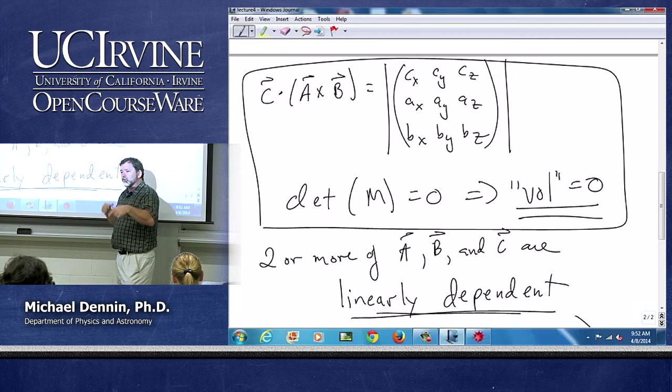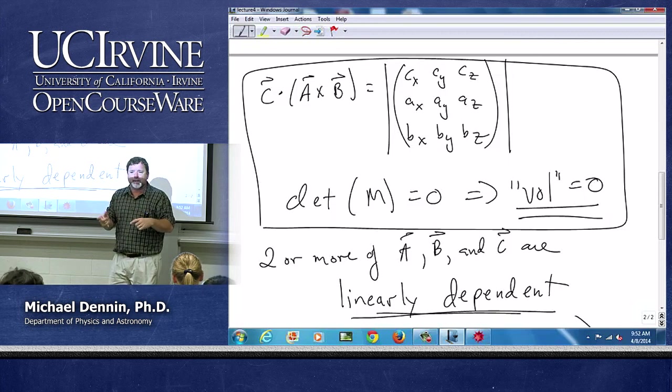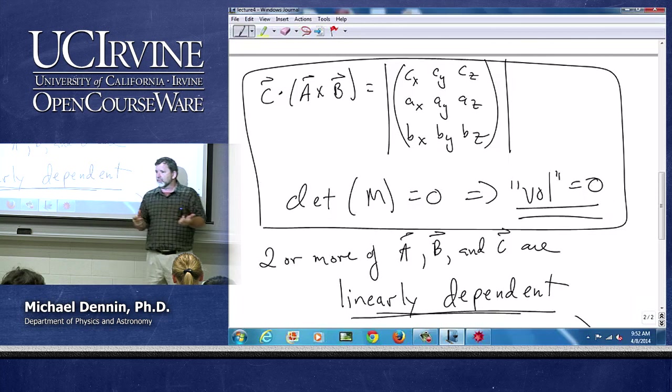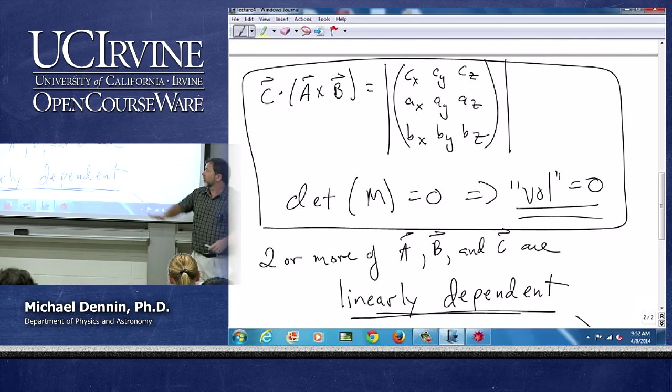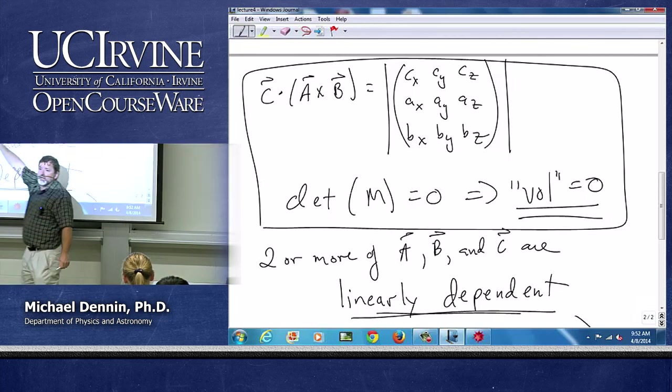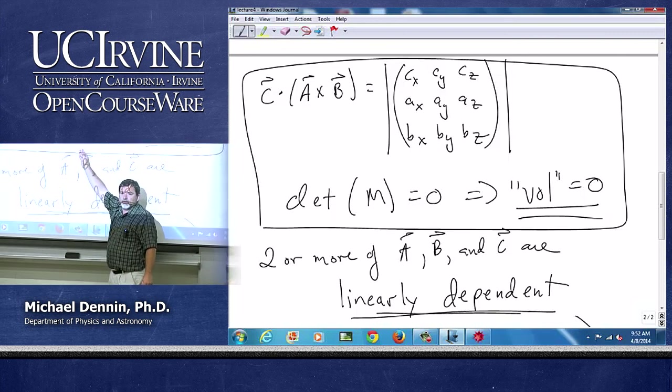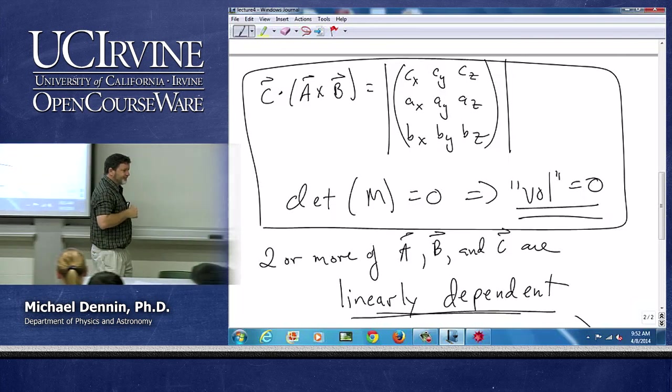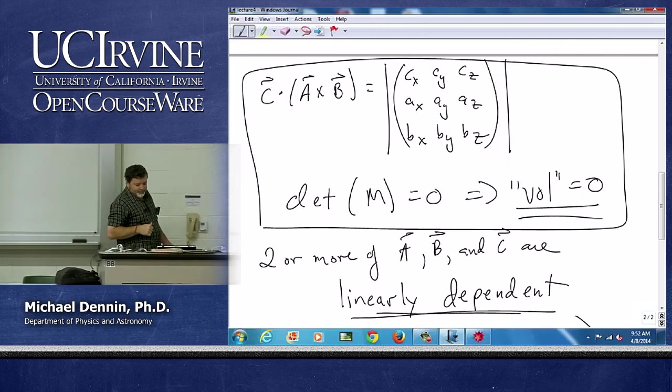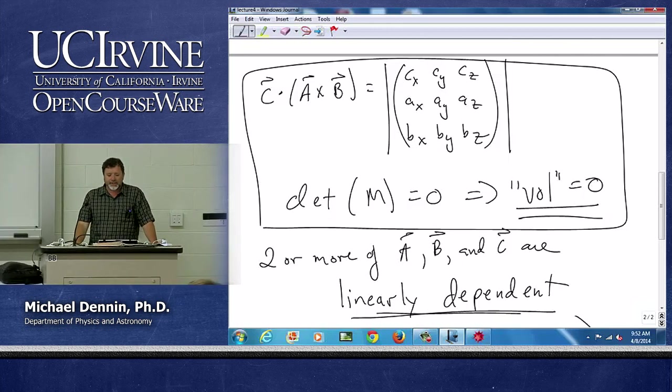then I know they're linearly dependent. And that comes from, if you recall, the rules of determinants that you can switch rows, or if rows are multiplicative of each other, they end up giving you a determinant of zero. And so this is a fairly deep concept in matrices. We use this determinant equals zero a lot. Any questions on that?